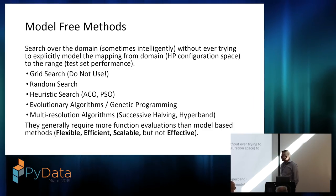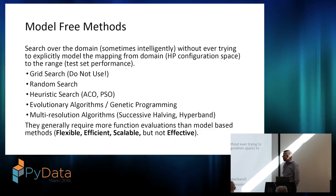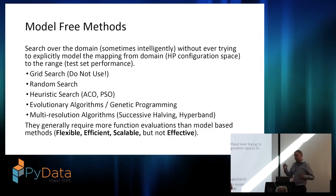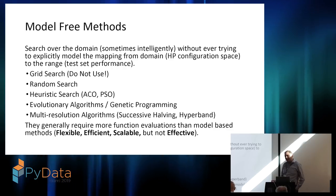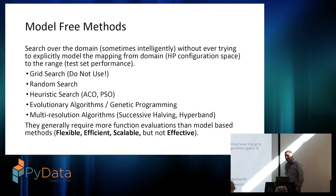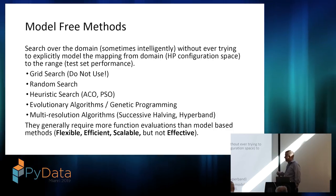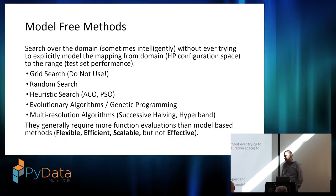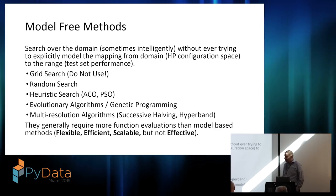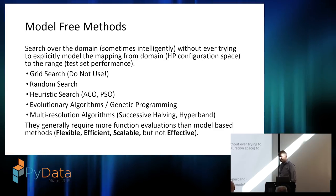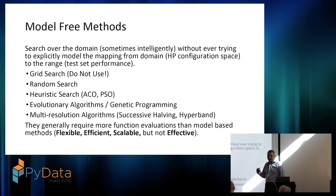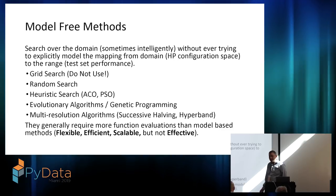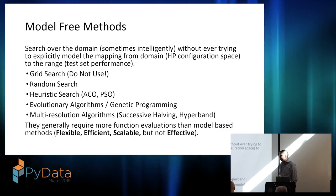The first class of algorithms is model-free methods. Here you're searching over your hyperparameter configuration space without trying to model the mapping from that domain to test set performance. The most basic one is grid search, where you lay a grid over your configuration space and check every point — don't do that. At minimum, go to random search. There are good theoretical reasons for this: in grid search you end up repeating the same parameter settings many times, and you'd be better off injecting random noise. Random search is always better than grid search.